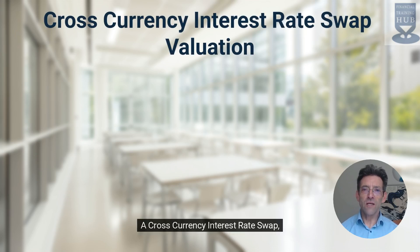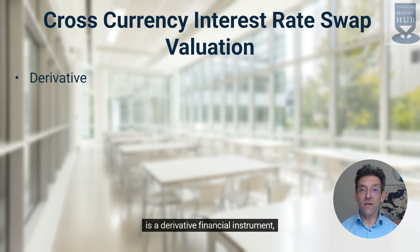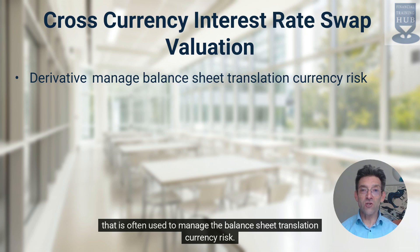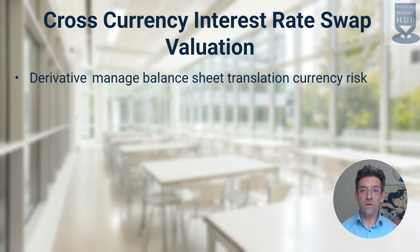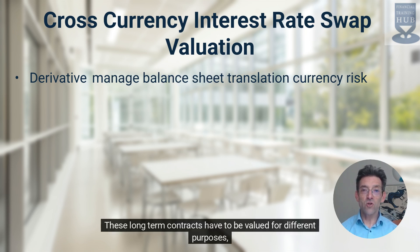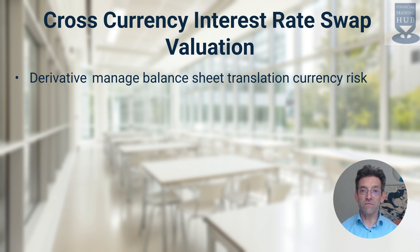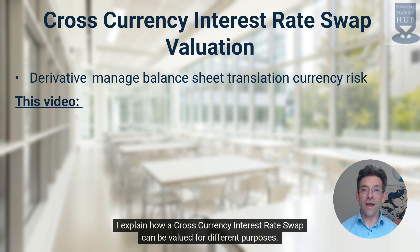A cross-currency interest rate swap is a derivative financial instrument that is often used to manage the balance sheet translation currency risk. These long-term contracts have to be valued for different purposes — for example, to value a swap for an annual account report. In this short video, I explain how a cross-currency interest rate swap can be valued for different purposes.